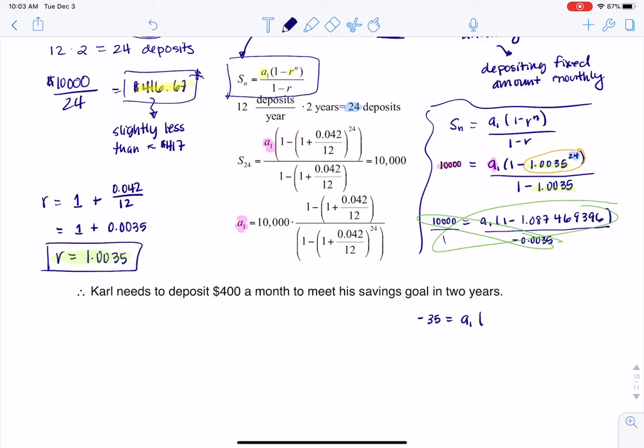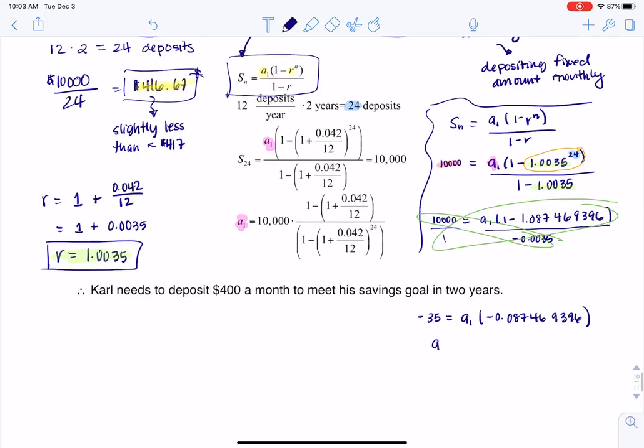And I'm going to divide negative 35 by that number. Let's see what we're getting here. Give me a moment. I'll divide negative 35 by negative 0.087469396. And I am getting, I'm a little bit off.